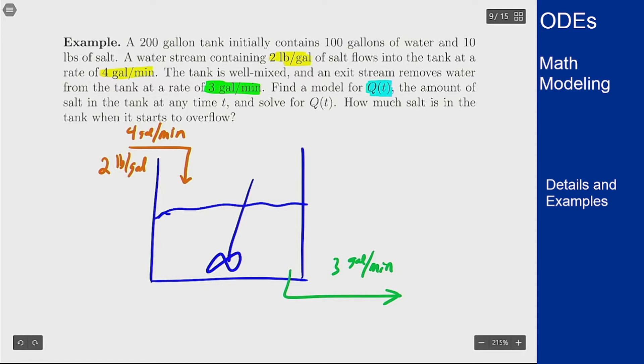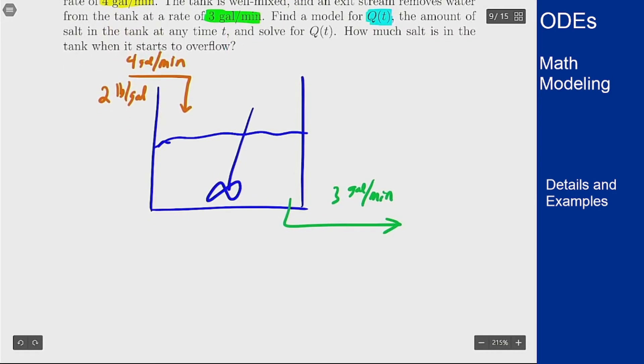Now if Q(t) is the amount of salt in the tank, the concentration of the outflow stream is going to be Q(t) divided by V(t), where V is the volume in the tank. That's the concentration of the outflow stream.